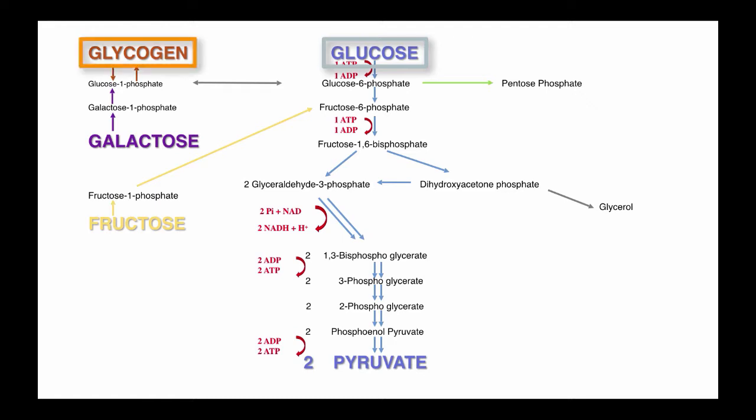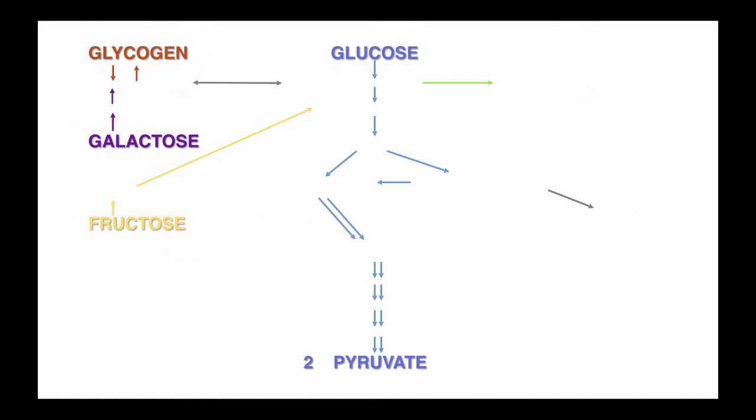Glycogen is a stored form of carbohydrate in the muscle and in the liver. Galactose and fructose are carbohydrates also found in the diet. There are many more types of carbohydrates, but glucose and glycogen are our focus for this video. Now we are going to cover the processes step by step. It looks a bit daunting, but let's just take it one step at a time.